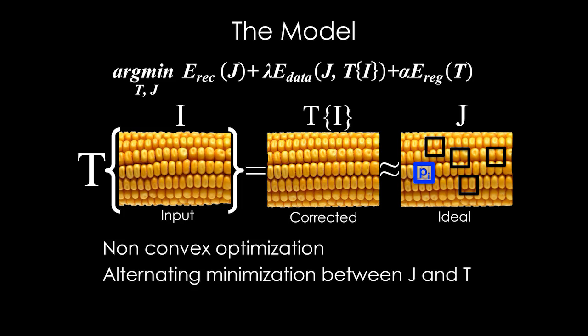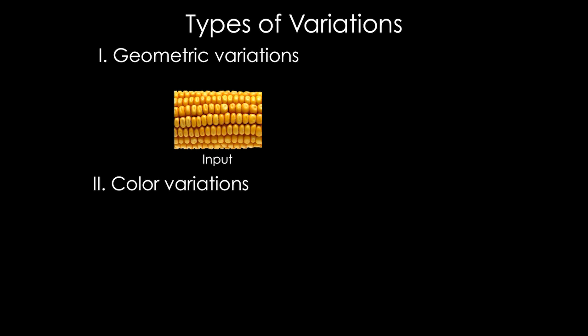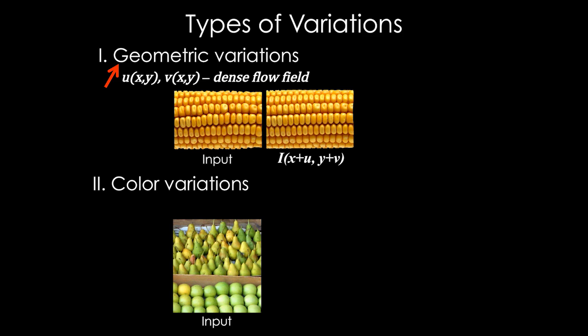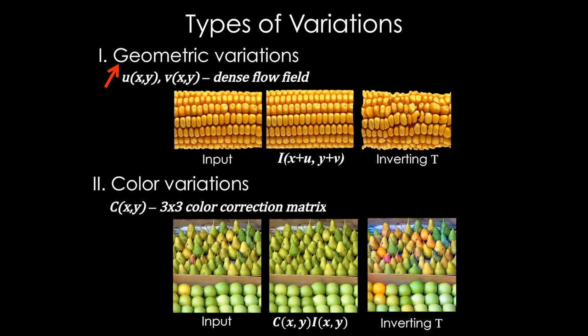Please refer to our paper for more details. Our formulation is quite general and can account for different types of variations. Here, we focused on geometric variations and color variations. In geometric mode, the transformation is a dense flow field, and by applying it, we make the repeating structures more similar in shape. In color mode, the transformation is a dense color correction matrix, and by applying it, we make the repeating structures more similar in color. Inverting the transformations reveals the variations.